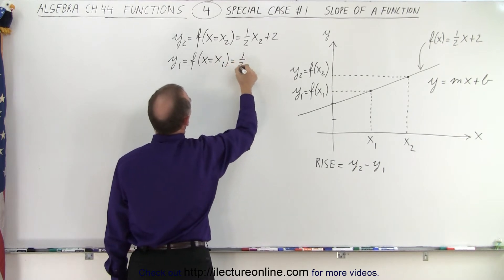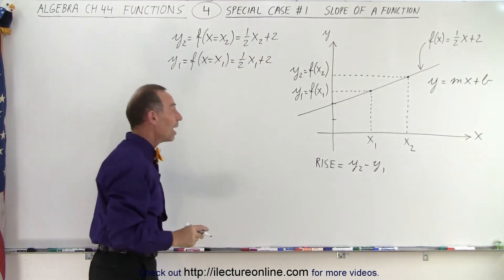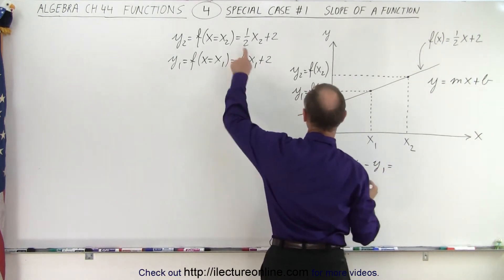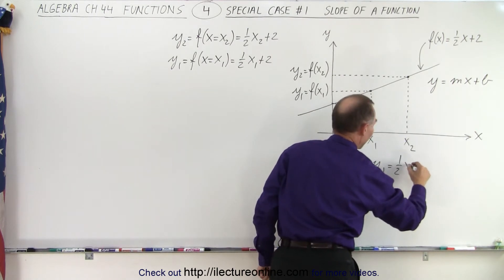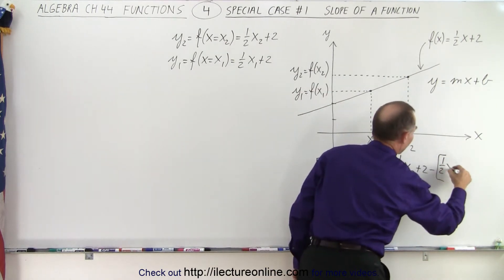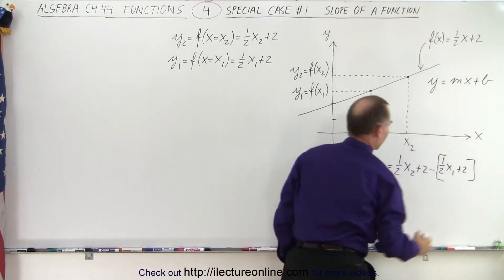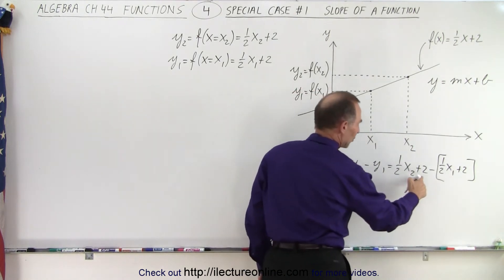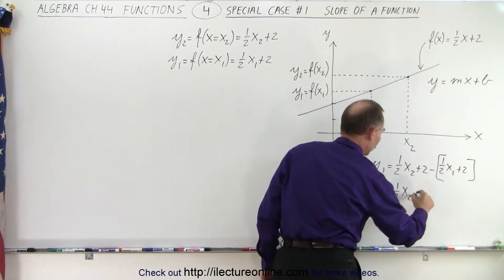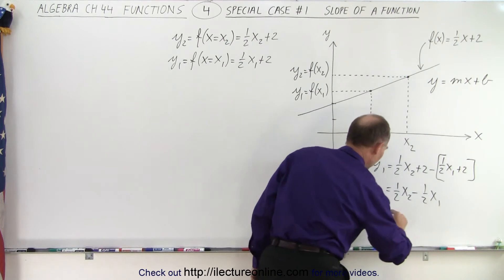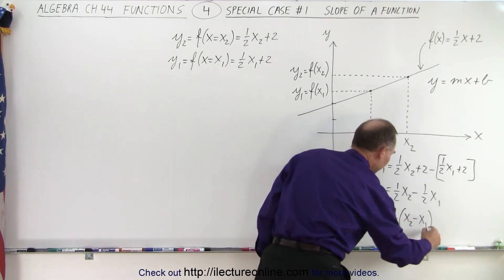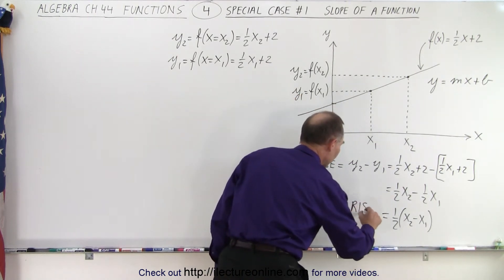Similarly, y₁ is equal to the function evaluated when x is replaced by x₁, which is one half x₁ plus 2. So the rise is the difference between those two values: one half x₂ plus 2, minus one half x₁ plus 2. The twos cancel out, giving us one half x₂ minus one half x₁, which equals one half times (x₂ minus x₁). That is the rise between the two points.